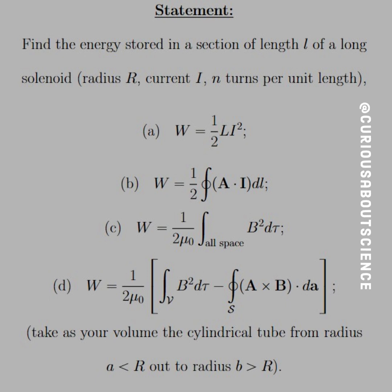And then D, where we're taking the mixture of B and C together, or some kind of mixture, and we see here that we take as our volume the cylindrical tube from radius A less than R, so inside the solenoid, and out to B, which is greater than R, so outside the solenoid.